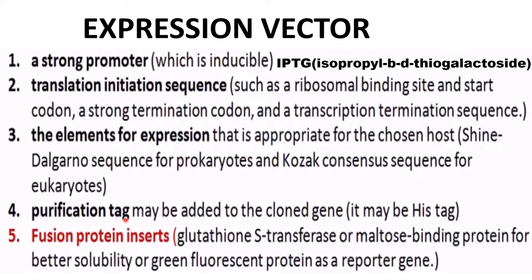Along with the purification tag, there is a fusion protein insert such as glutathione S-transferase (GST) or maltose binding protein (MBP) for better solubility. Whatever protein is produced from the gene of interest will be better solubilized if GST or MBP is present. The insert could also be a green fluorescent protein, which acts as a reporter gene.